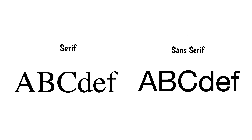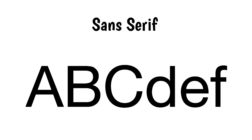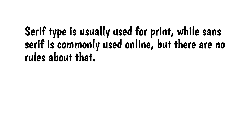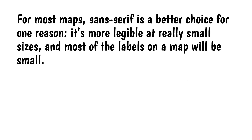Most type falls into two main categories: serif and sans serif. Serif type has little feet called serifs; sans serif means without serifs. Serif type is usually used for print, while sans serif is commonly used online, but there are no rules about that. Both can be used effectively on maps, but sans serif is a better choice for one reason — it's more legible at really small sizes, and most labels on a map will be small.